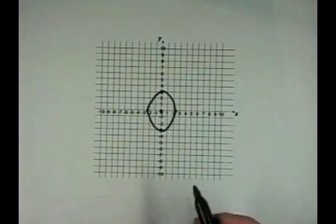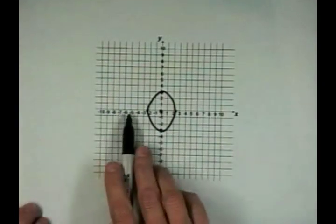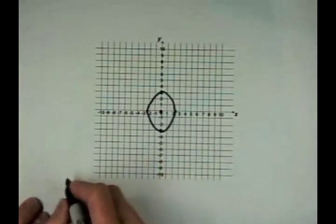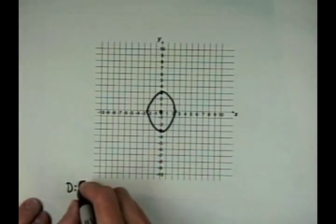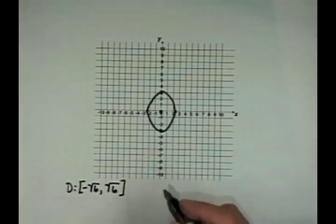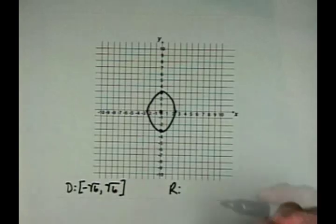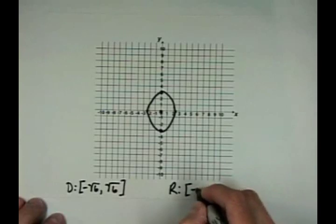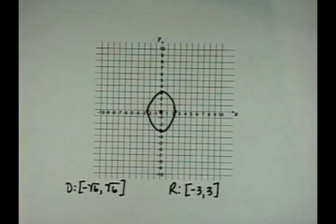We've also been asked to write down the domain and range. The domain is the x values covered from left to right: from negative square root of 6 to positive square root of 6, including those endpoints. The range is the y values covered from bottom to top: from negative 3 to 3.